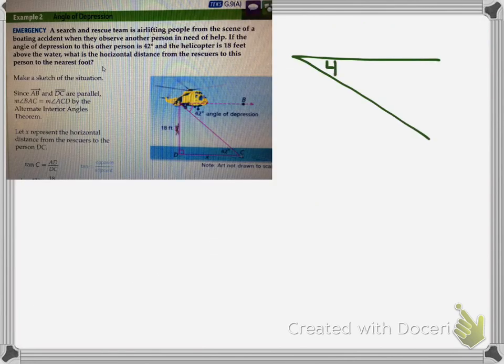All right. One more example. Let's look at an angle of depression. So here they're talking about a boating accident. A search and rescue team is airlifting people from the scene of a boating accident when they observe another person in need of help. If the angle to this other person is 42 degrees and the helicopter is 18 feet above water, what's the horizontal distance from the rescuers to the person in the water?